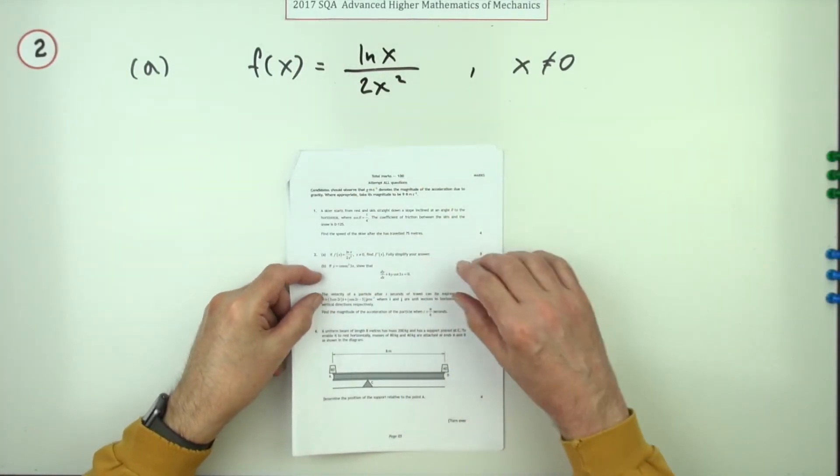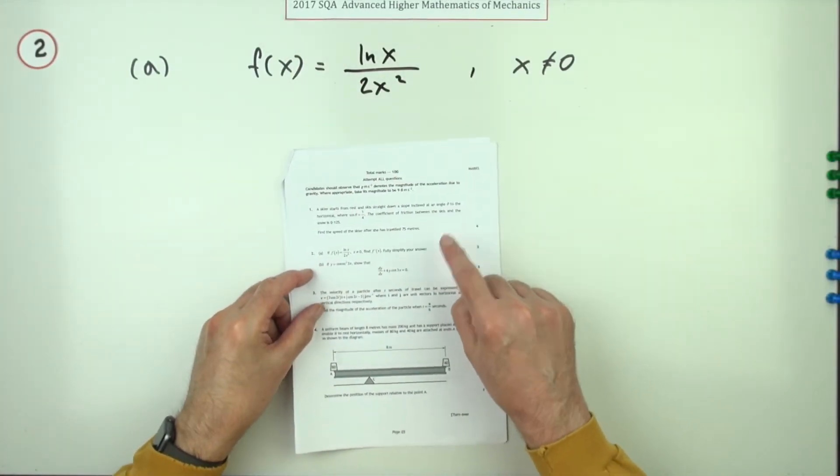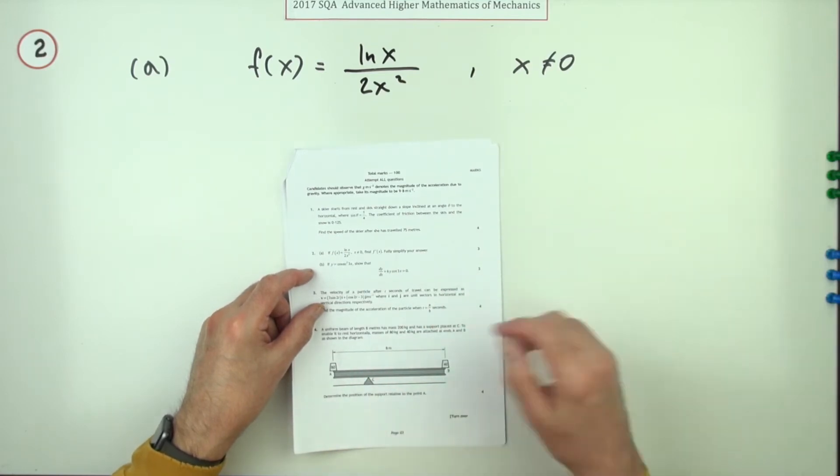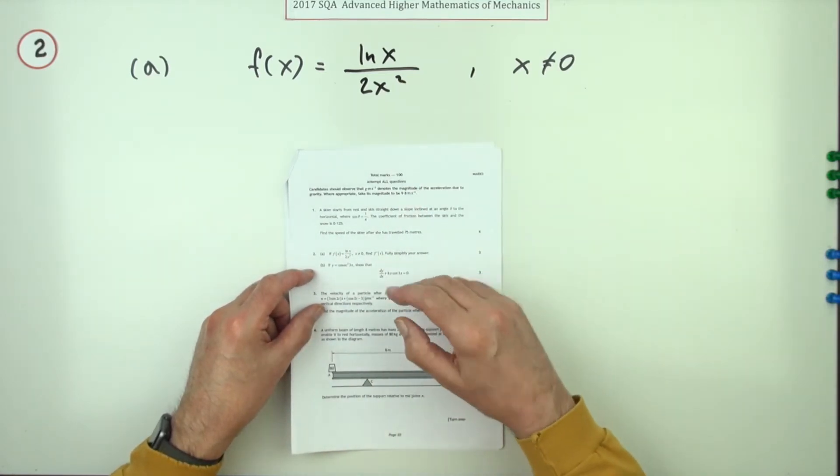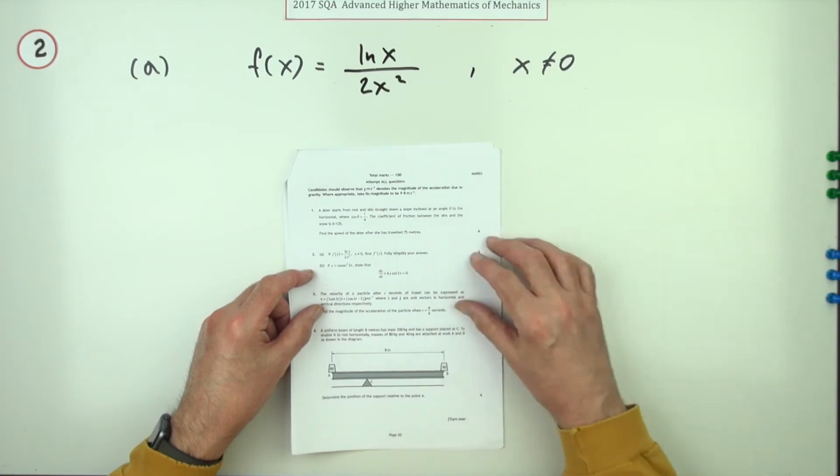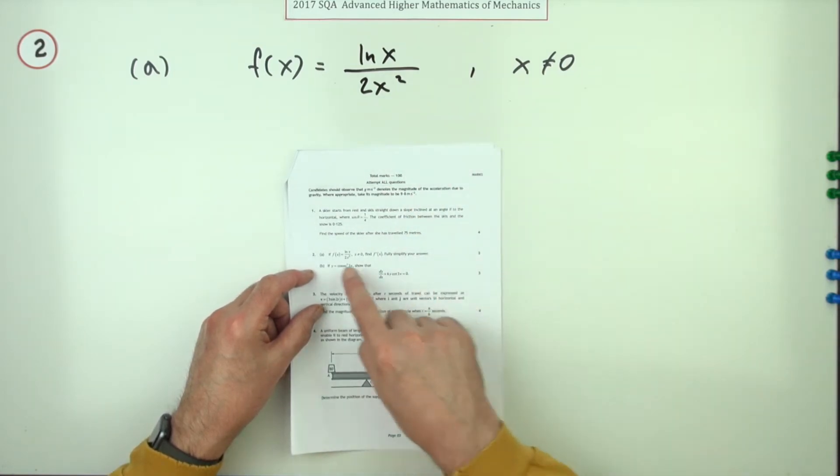Number two then from the 2017 mathematics and mechanics. Here we go, a straightforward question for six marks, not like question one where you had to interpret the situation. Question one actually seems to go on forever.